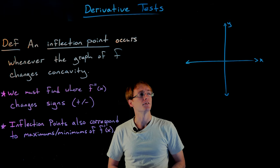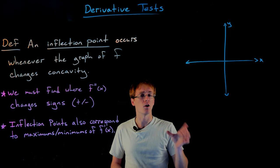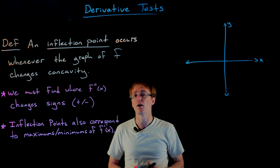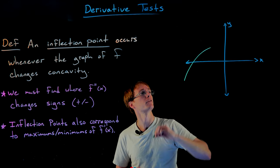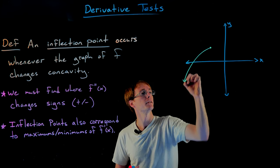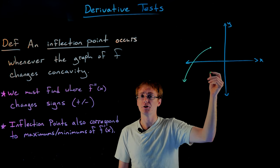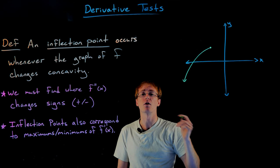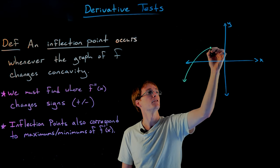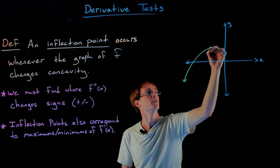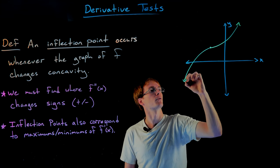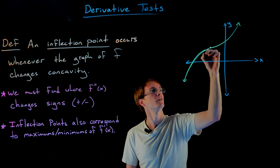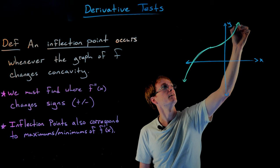On our set of axes here I'm going to graph a function that is concave down on one part and concave up on another. So maybe we are concave down and increasing up to this point right here, then we change concavities — this is going to be our inflection point — and now we're concave up and still increasing. So our graph is going to look something like a shifted cubic function.